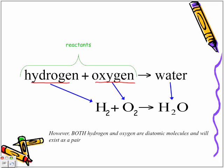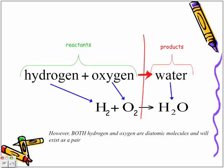Hydrogen and oxygen are what we call the reactants — they're called reactants because they're the parts that react with one another to create a final product. We have an arrow here that separates our reactants from our products. Whenever you see an equation, keep in mind that to the left of the arrow are the reactants, and to the right of the arrow are our products.